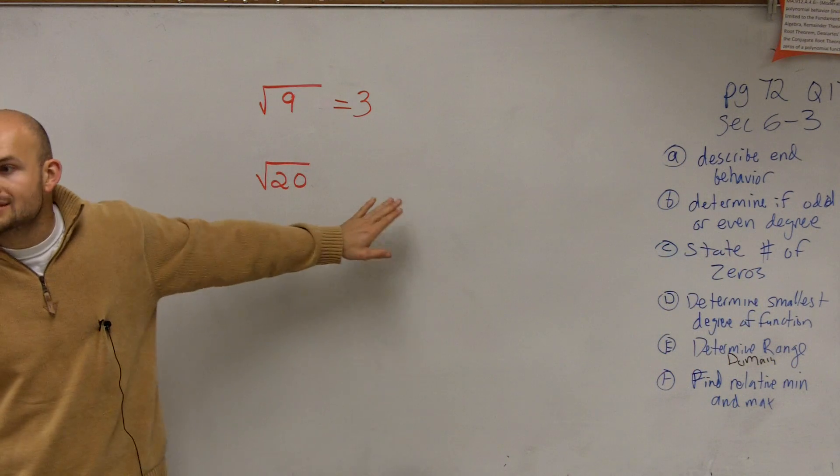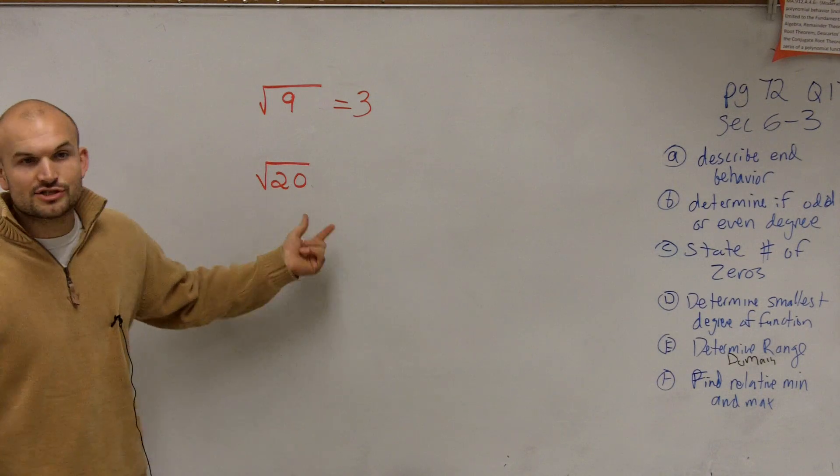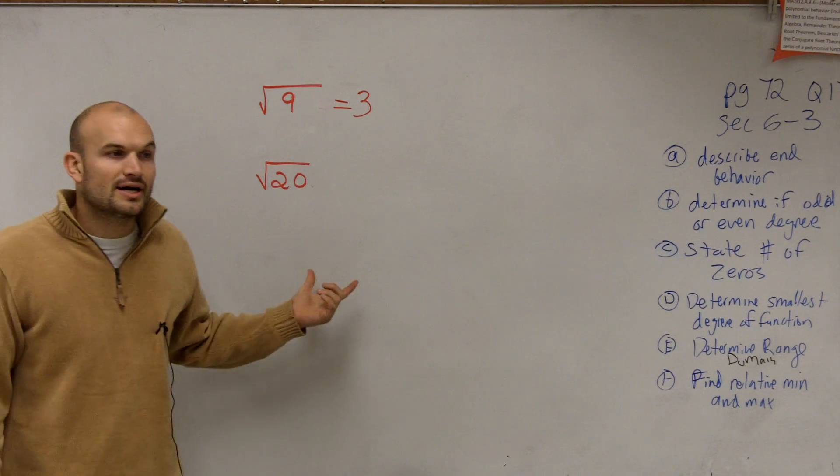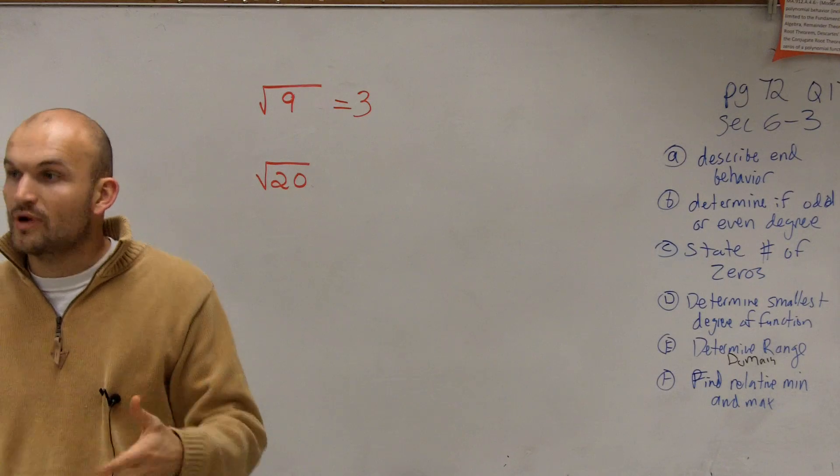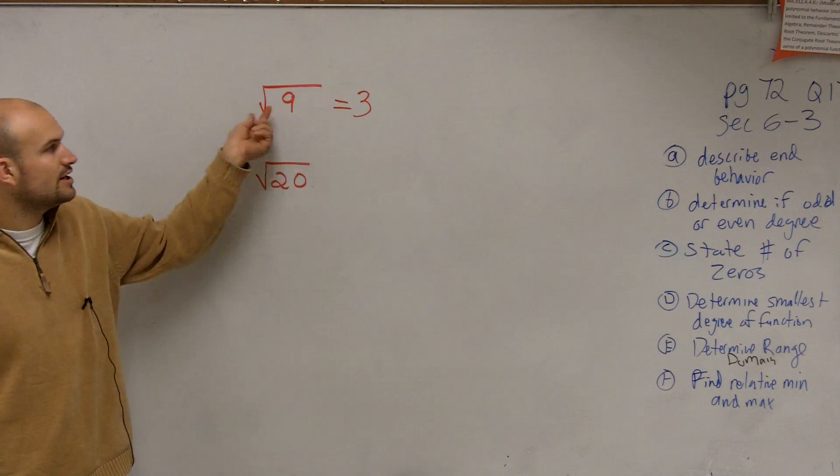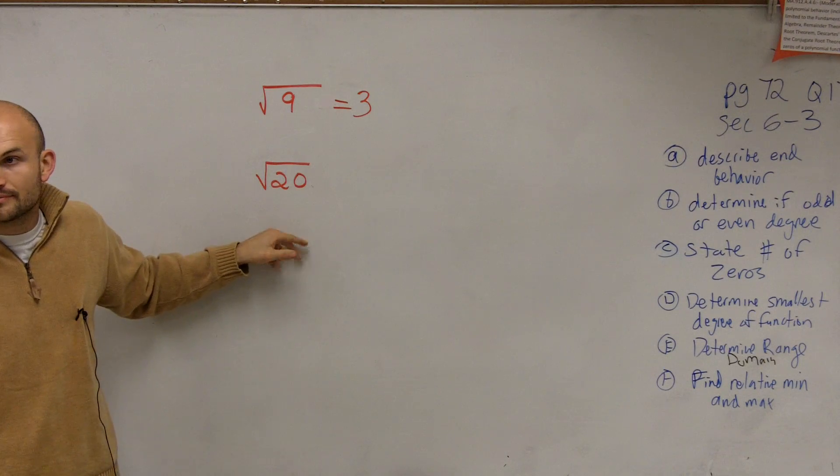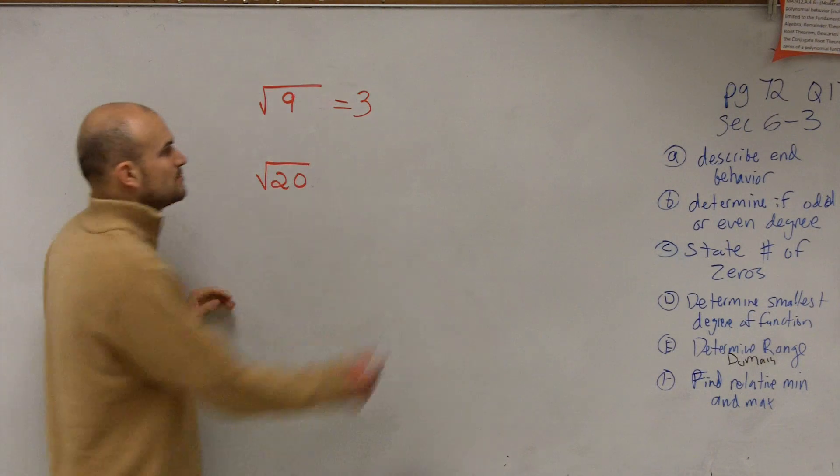So what we like to do is simplify this. What I can do is say, can I rewrite 20 as a product of two numbers where one of them is a square number? So I took the square root of 9. Is there another number that I can take the square root of that divides into 20? Let's think about the square numbers.